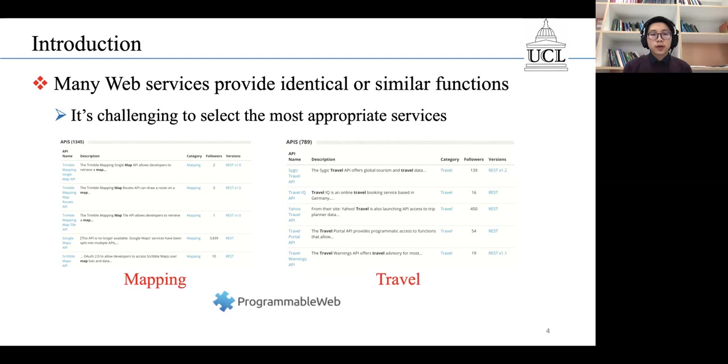As demonstrated by the ProgrammableWeb website, there are more than 1,000 APIs providing mapping services.